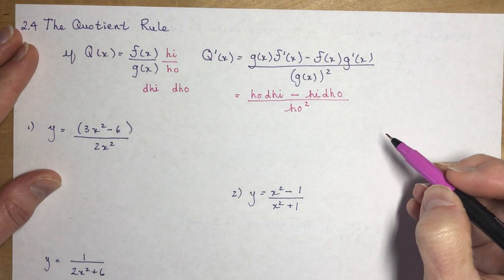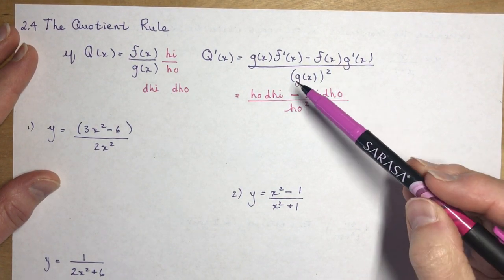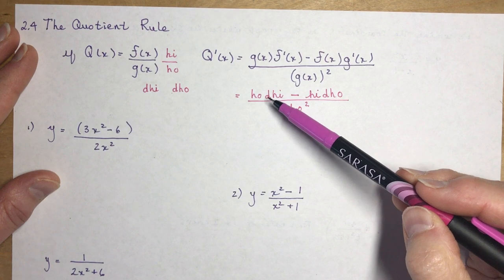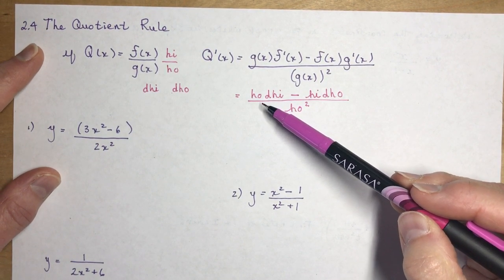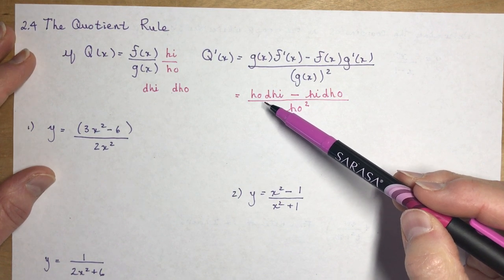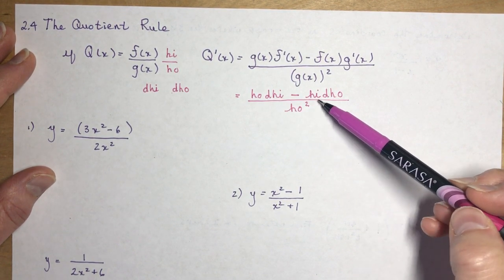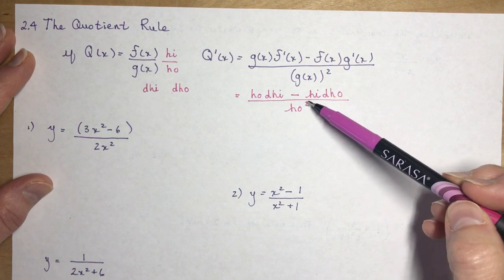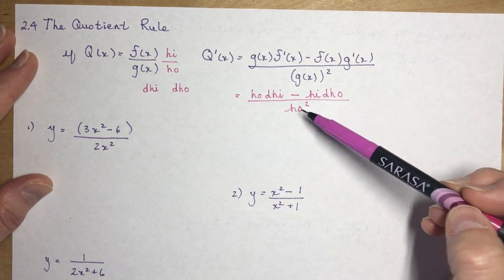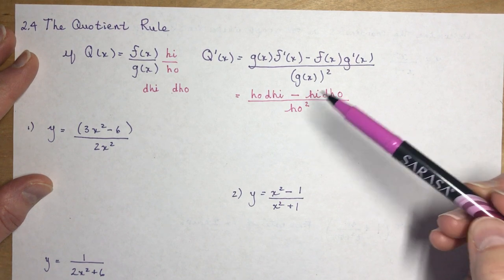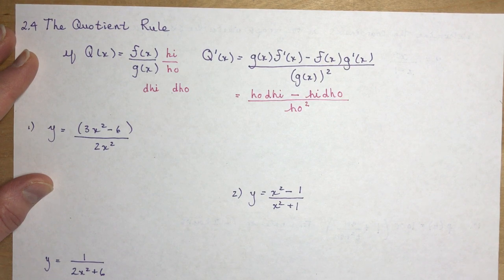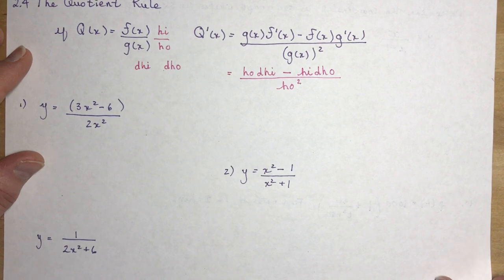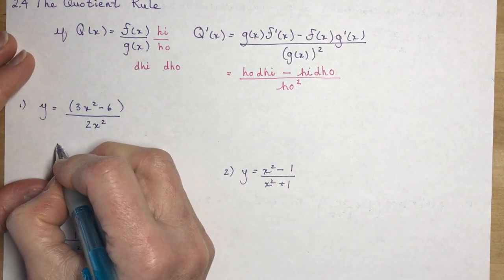That is the easiest way for you to remember this. Students will ask how do we know if it's ho first or high? It's ho because we just finished Christmas - ho, ho, ho. So ho d-hi minus high d-ho over ho squared. If you say that every time, I swear you will not make a mistake. Those students who were too cool for school and didn't want to do that always had trouble.